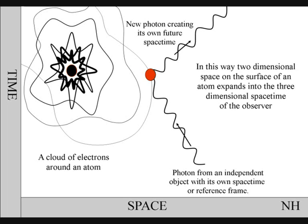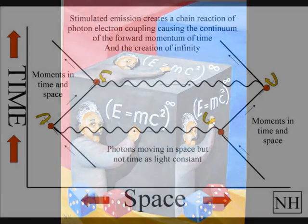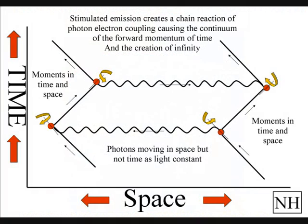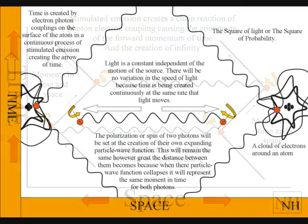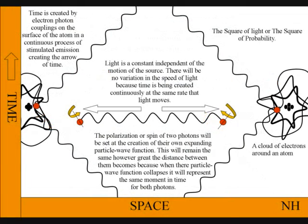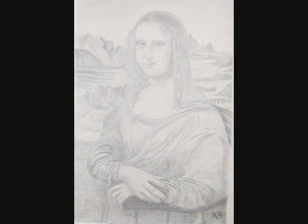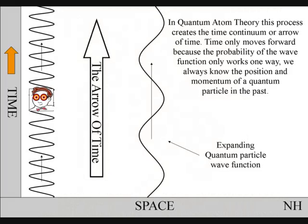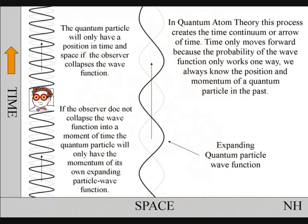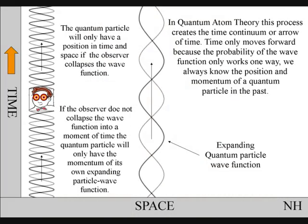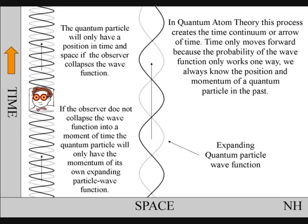This is a continuous process within our universe that Einstein called stimulated emissions, that creates a chain reaction of photon-electron couplings. In quantum atom theory, this process also creates a time continuum, or arrow of time. Time only moves forward because the probability of the wave function only works one way.